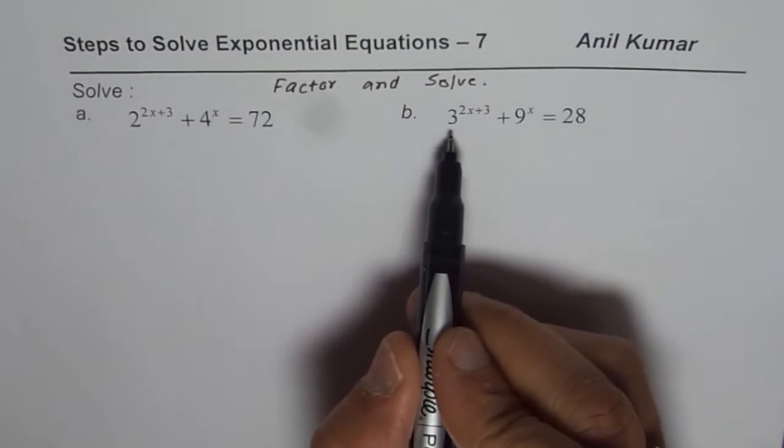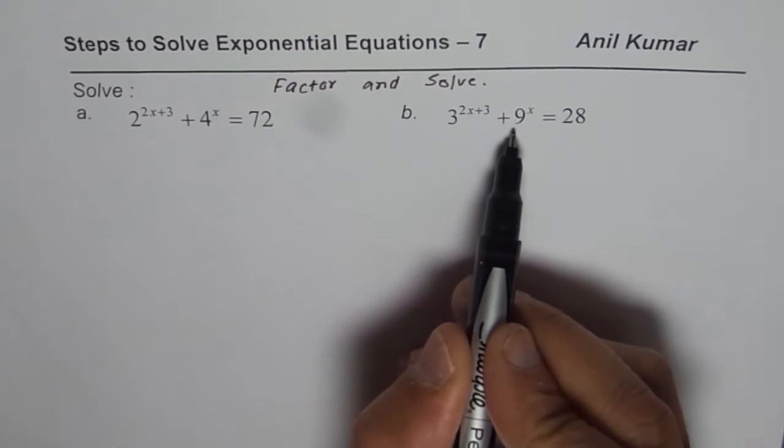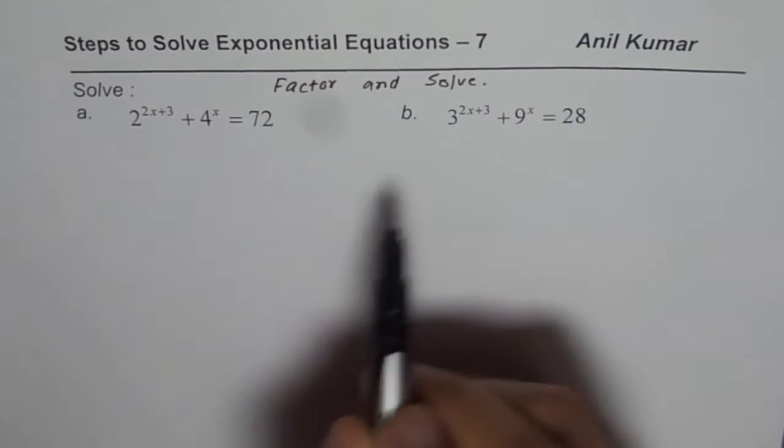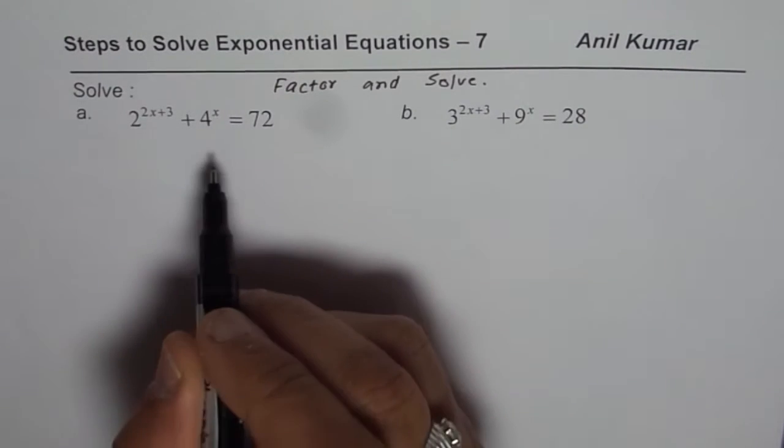The next one is 3 to the power of 2x plus 3 plus 9 to the power of x equals 28. So let us solve them one by one.